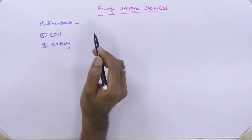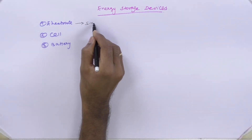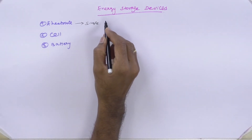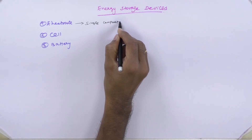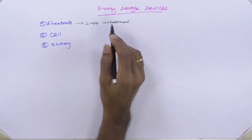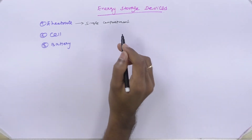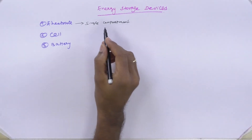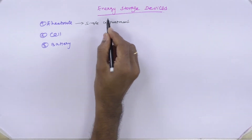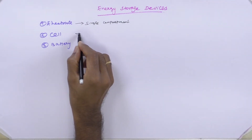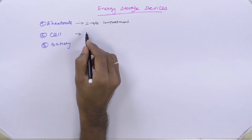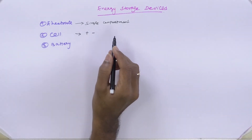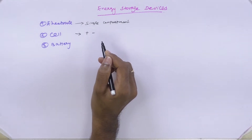An electrode is a kind of single compartment where the metal will be placed in the corresponding salt solution or some other electrolyte. That single compartment is called either an electrode or a half cell. A cell is nothing but a combination of two electrodes — it will have both a positive and a negative compartment. The combination of two half cells is called a cell.